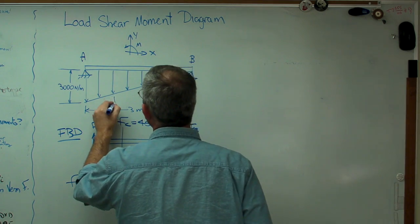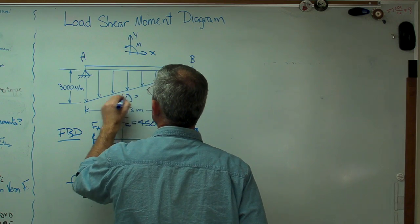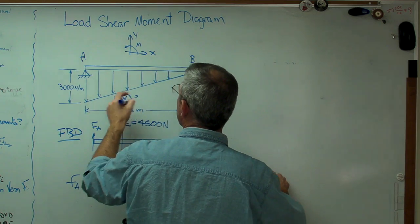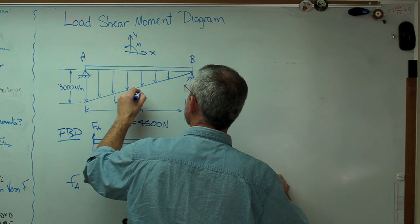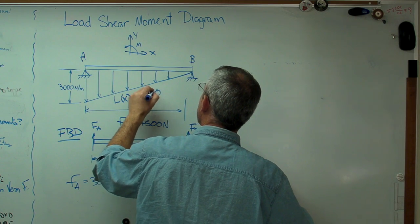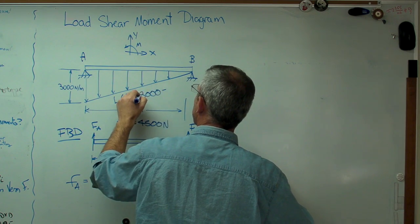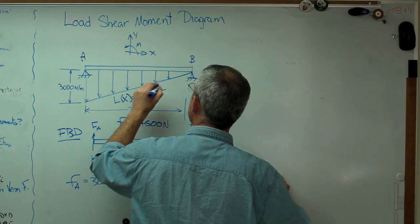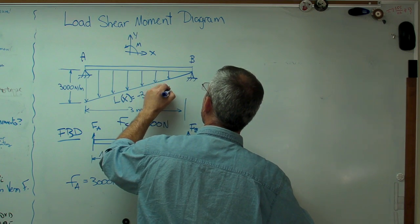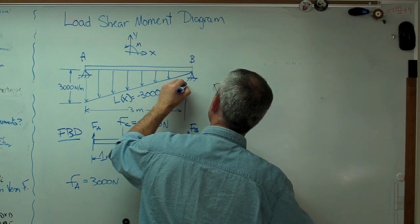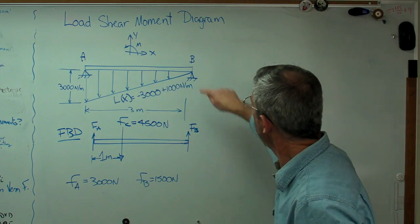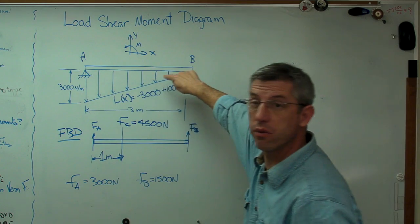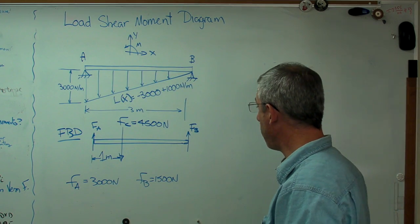Now, I need to know L of X, which is that line right there. What's easy here, if we start our coordinate system there, that's minus 3,000 newtons plus 1,000 newtons per meter times X. That's the equation for that line right there. Once we have that, we're in good shape.